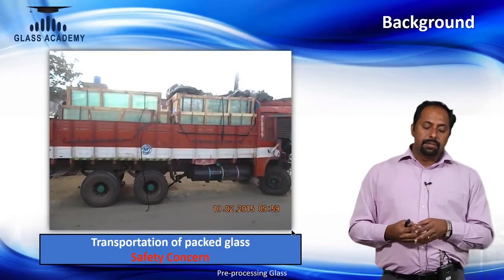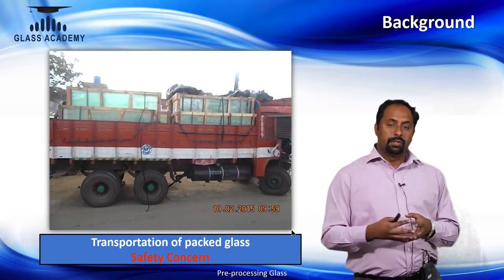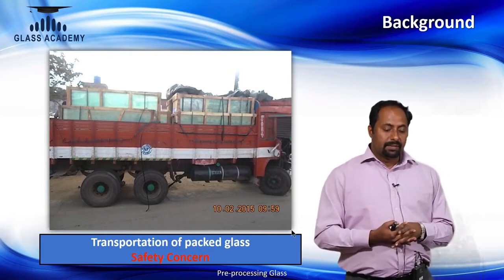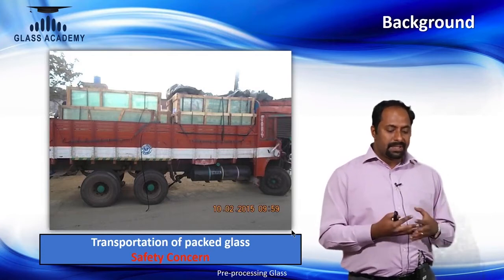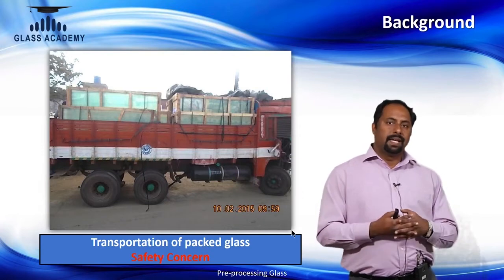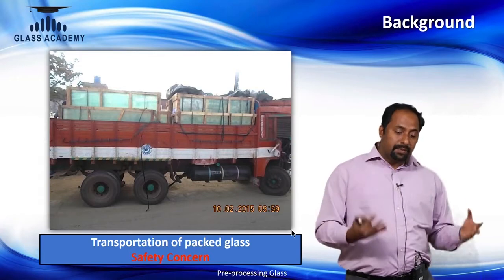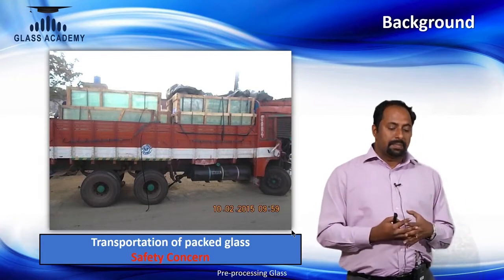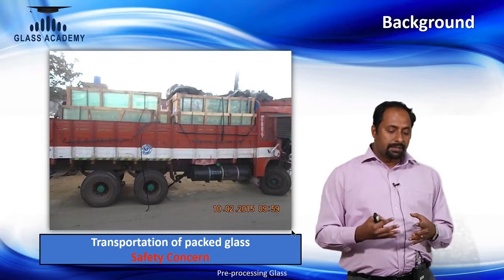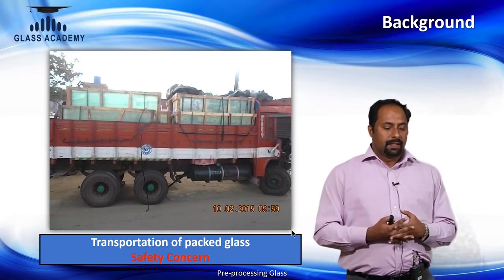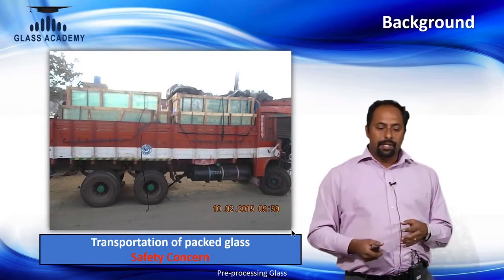Transportation of packed glass on roads using trucks is also a hazardous operation. Poor road conditions can cause the truck to topple, and people who go near the truck to retrieve goods — or anyone nearby at the time of the accident — can get hurt. These are all important topics where safety in glass handling comes into the picture.